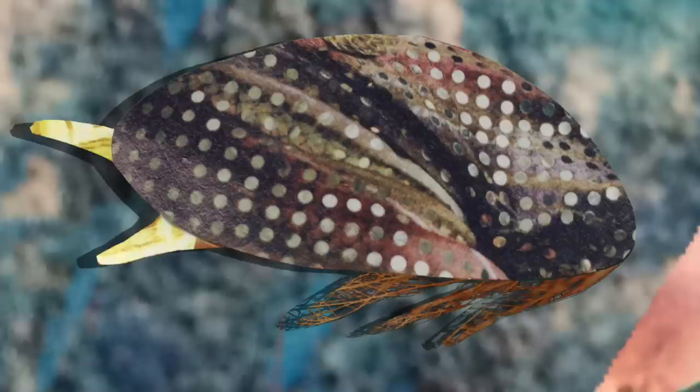she undergoes a transformation, losing her eyes and her legs. Then, she injects herself into the crab's circulatory system. Once inside, she starts forming a root system throughout the crab's body, castrating him in the process.